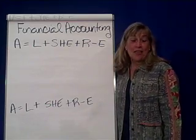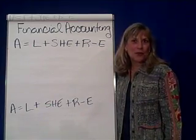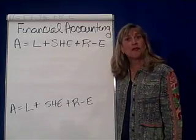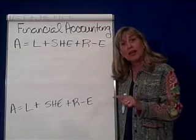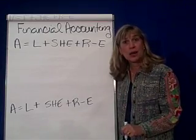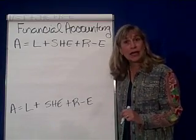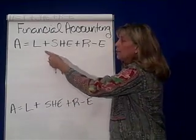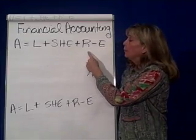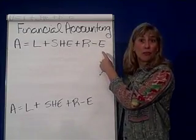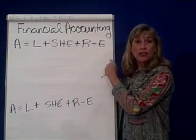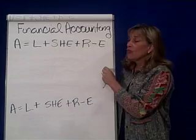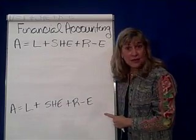Financial accounting. We're in the second chapter. What we're going to talk about is how accounting is the language of business. But first, let's review what we learned in the previous chapter, which was the accounting equation — assets equal liabilities plus stockholders' equity plus revenue minus expense. What we're going to talk about this chapter is how that accounting equation changes from the first of the year to the end of the year.